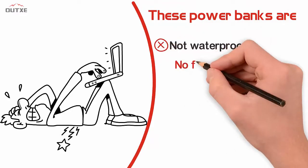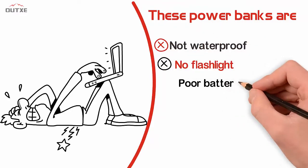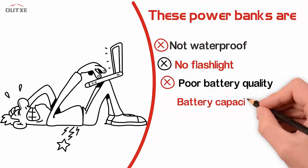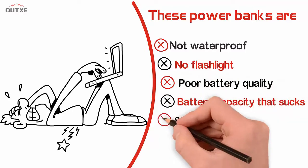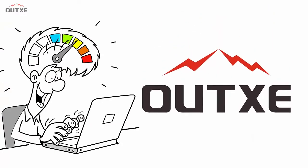Waterproof, no flashlight, poor battery quality, battery capacity that sucks, slow charging. Until one day he finds out XC Rugged Power Bank 2100.